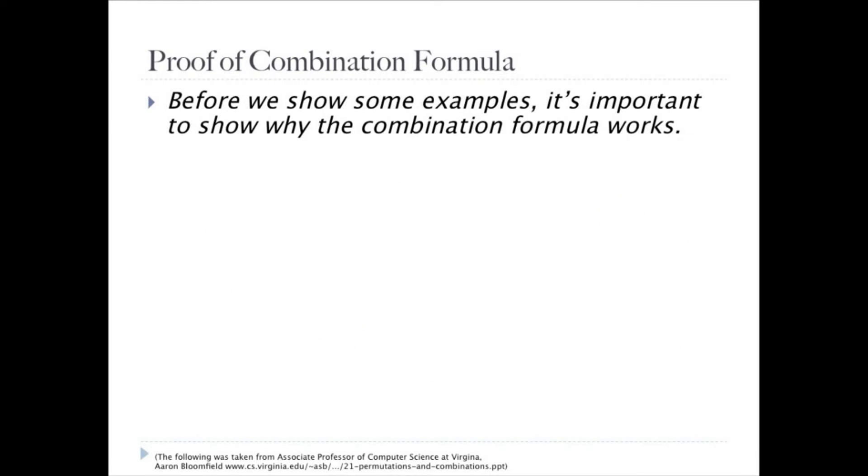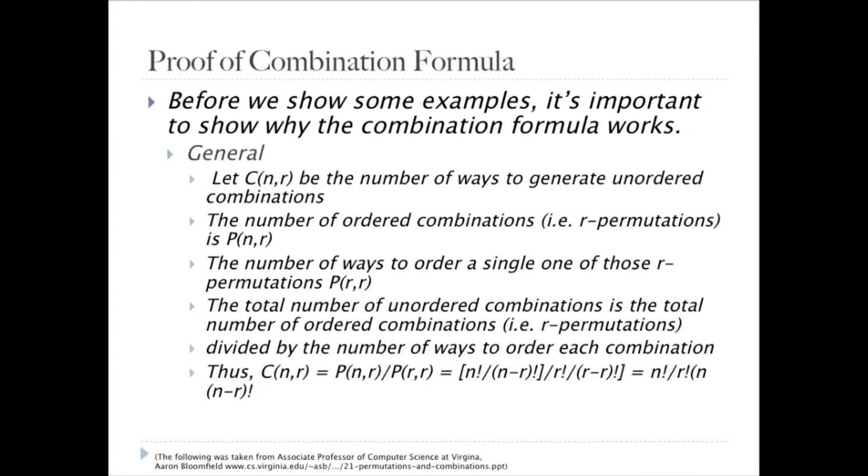Before we show some examples, it's important to show why the combination formula works. In general, we can see the following. Let C(n,r) be the number of ways to generate unordered combinations. The number of ordered combinations is P(n,r). The number of ways to order a single combination is P(r,r). The total number of unordered combinations is the total number of ordered combinations divided by the number of ways to order each combination.